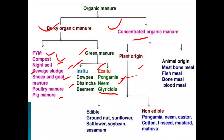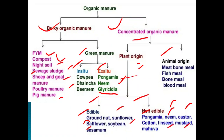Concentrated organic manures are of plant origin and animal origin. Under plant origin, we have oil cakes, which are classified as edible oil cakes and non-edible oil cakes. Edible oil cakes include groundnut, sunflower, safflower, soybean, and sesamum. Non-edible oil cakes include Pongamia, neem, castor, linseed, mustard, mohua, and cotton.